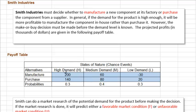If there is a high demand, it's worthwhile to manufacture the component because there will be some initial cost to set up the manufacturing process, but the variable cost per unit should be lower. We can see the payoff of manufacturing is higher than that for the purchase decision. But if the demand is low, it's better to purchase the component, since with lower volume it's not worthwhile to set up the manufacturing process.